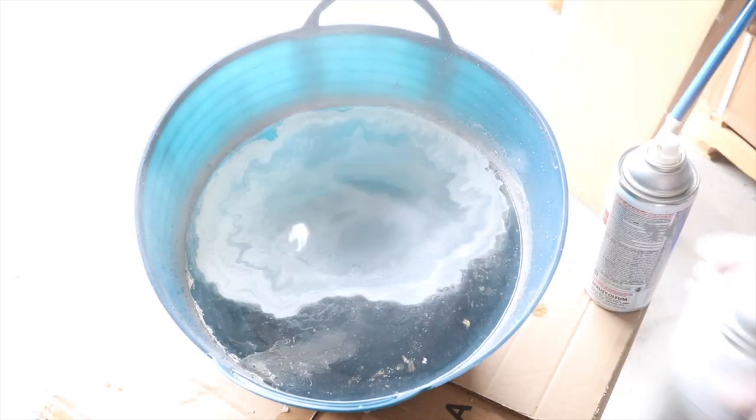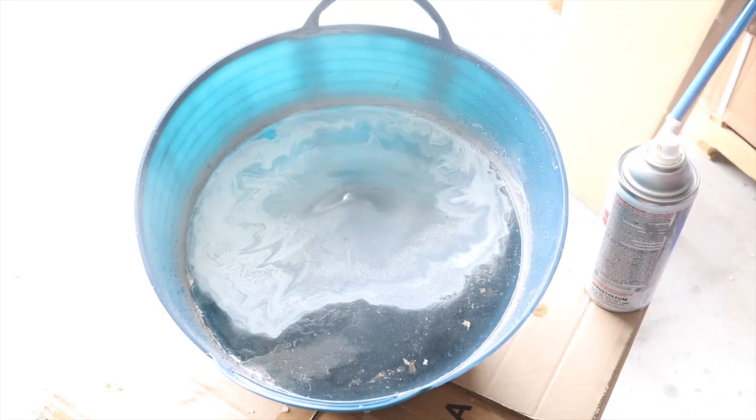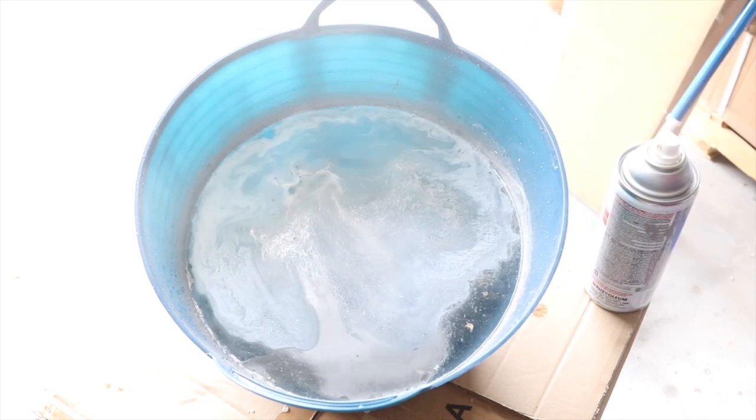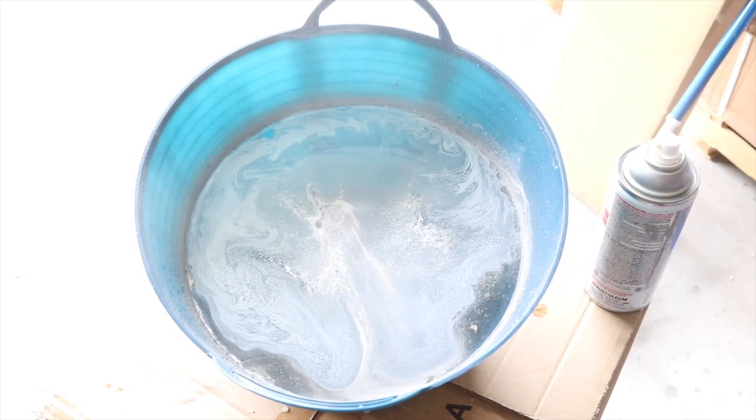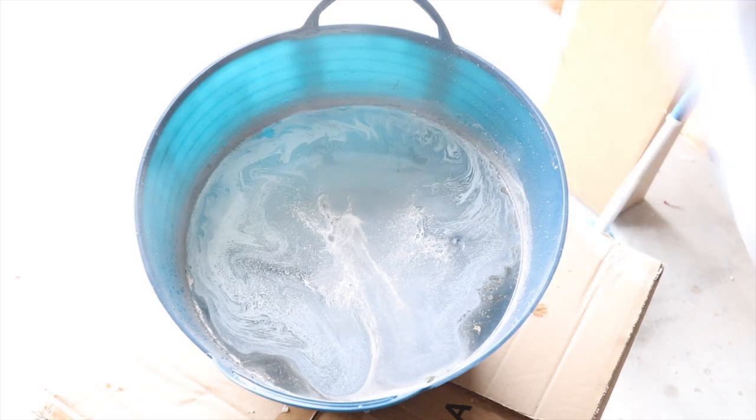Now I'm ready to dip the other side of the piece. And I'm going to add spray paint in there again, using the same colors as I did before. Then I'm going to stir it up and then dip my object in there.